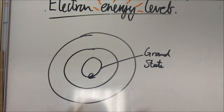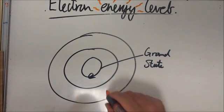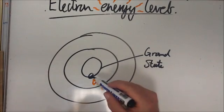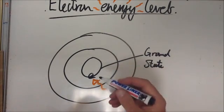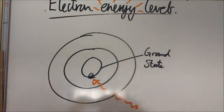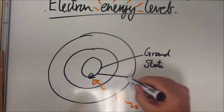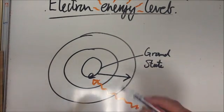So say for example this electron here comes into contact with a nice high energy photon. This electron will jump up an energy level. It will increase the amount of energy it has. So it will move up an energy level like so. It will absorb that photon.